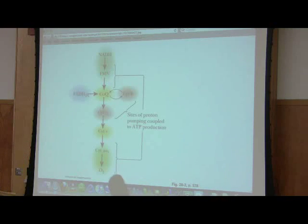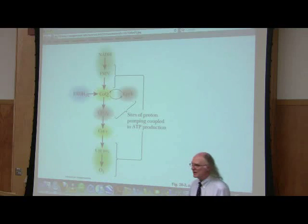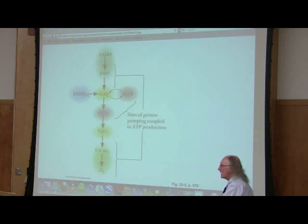What does it donate them to? It donates them to complex IV. So that's pretty easy to memorize, right? NADH goes complex I, coenzyme Q, complex III, cytochrome C, complex IV. FADH goes complex II, coenzyme Q, complex III, cytochrome C, complex IV. And look down here at the bottom. Those electrons ultimately have to go somewhere. We can't just pass them on and pass them on and pass them on. They ultimately have to make it to their destination. And their destination is oxygen.